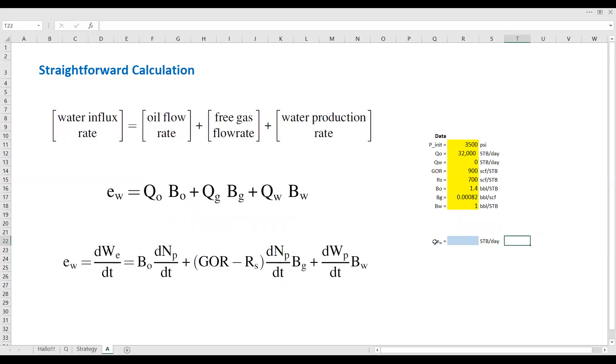Okay, EW or water influx rate is QO or oil flow rate 32,000, and then times BO, all right, and then plus we use this formula, production GOR 900 minus RS 700, and then we close it, times dNp dt, which is oil flow rate, and then times the BG, gas flow rate, and I also want to make it in the parenthesis. Okay, and finally, we calculate the water production rate plus, and then water production rate, which is zero. Okay, but we just need to calculate it for the sake of completeness, all right, BW.